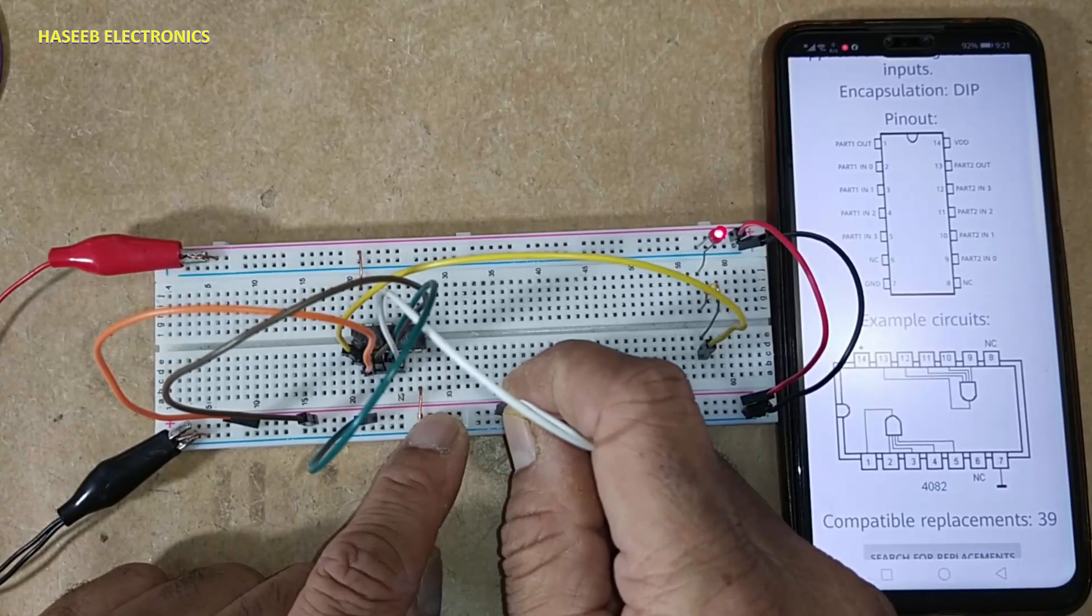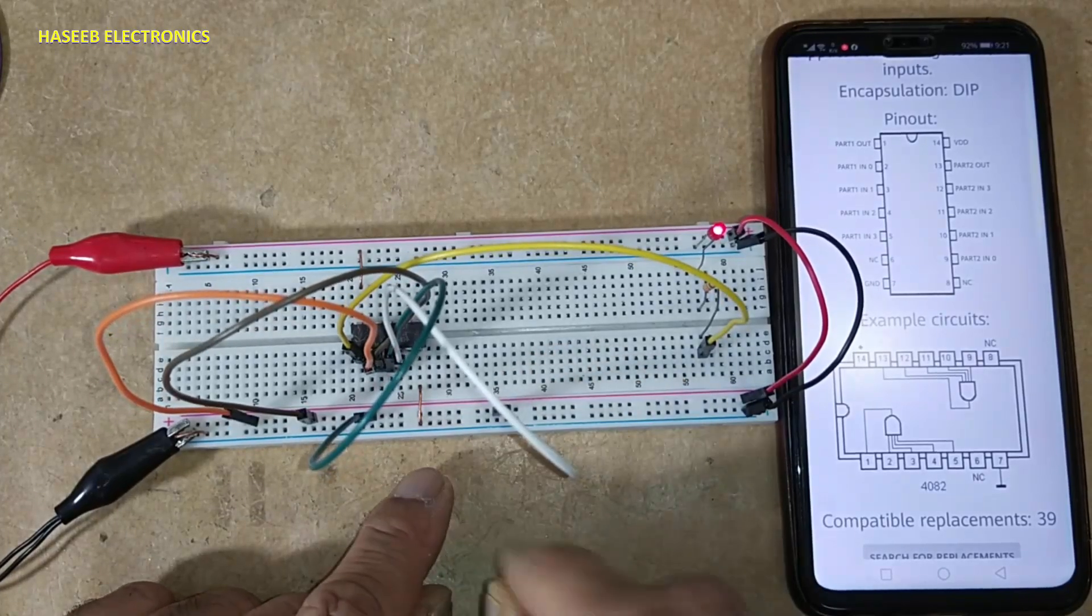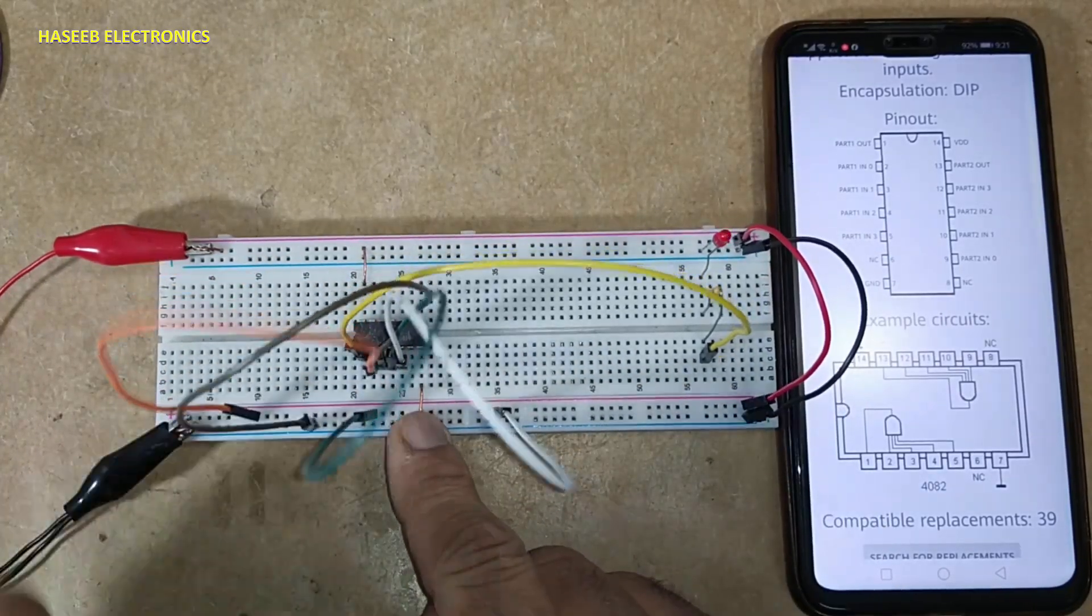When all inputs are high, output is high. Anyone becomes low, output will be low.